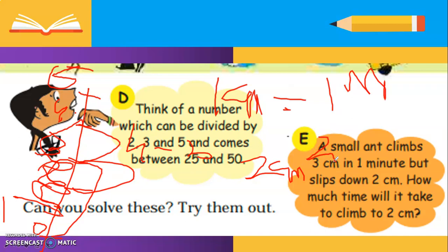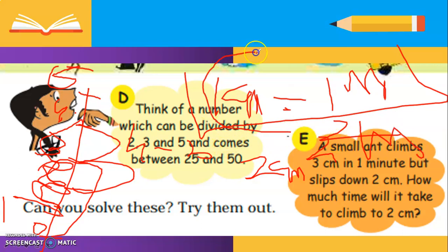the ant is reaching. You can also use this logic: if 1 minute में it is reaching 1 cm, so 2 minutes में it will reach how many cm? 1 cm it is reaching in 1 minute, so in 2 minutes, 2 cm. So with this logic you can solve it. I have taught you 2 to 3 methods on how to solve this.